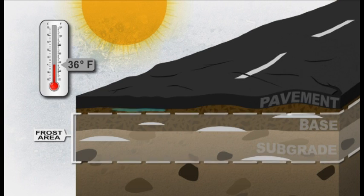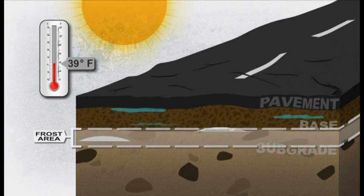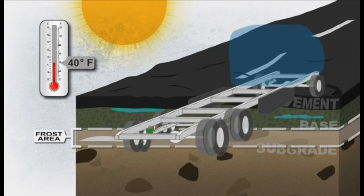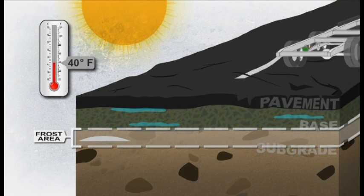Water in the base layer is trapped between the pavement surface above and the still-frozen subgrade soil below. With nowhere to go, the extra water pulled in by capillary action during the freezing process saturates and weakens the base. Now, traffic loading damages the entire pavement structure.